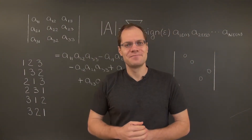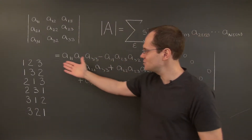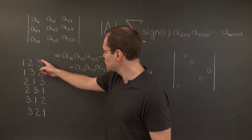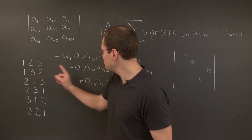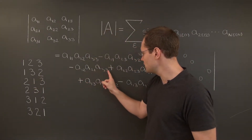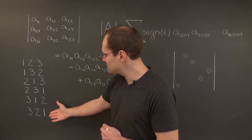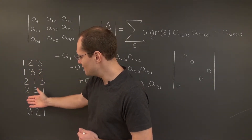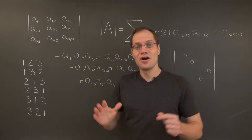Alright, there you have it. Now you can see how there is one term corresponding to each of the permutations — you just look at the columns. We have the permutations: 1, 2, 3; then 1, 3, 2; then 2, 1, 3; then 2, 3, 1; then 3, 1, 2; and 3, 2, 1. I was very systematic: first I did the terms with 1's in the first place, then with 2's, then with 3's. In higher dimensions it would be a much longer list.